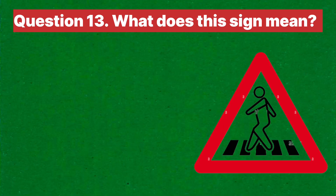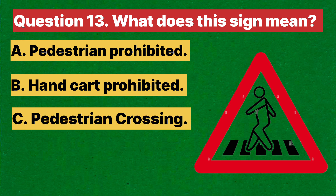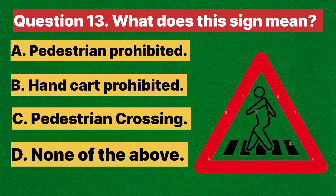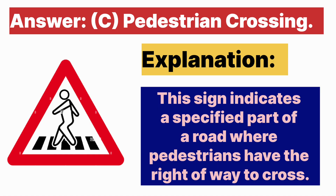Question thirteen: What does this sign mean? A. Pedestrian prohibited. B. Handcart prohibited. C. Pedestrian crossing. D. None of the above. Answer is C, pedestrian crossing. Explanation: this sign indicates a specified part of a road where pedestrians have the right of way to cross.